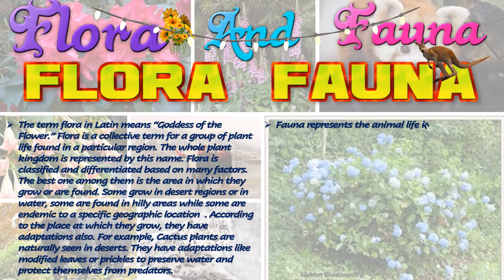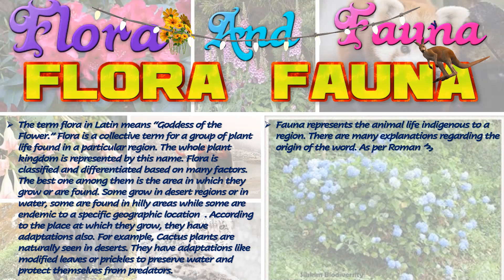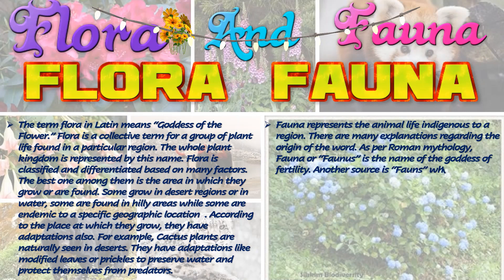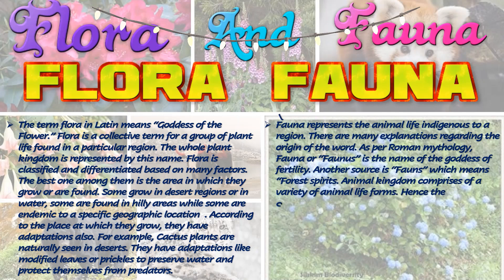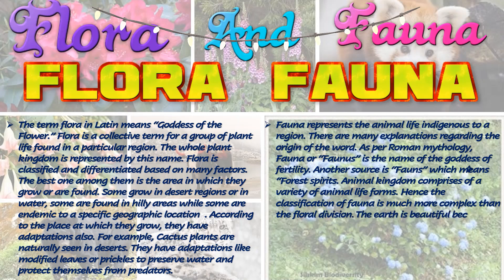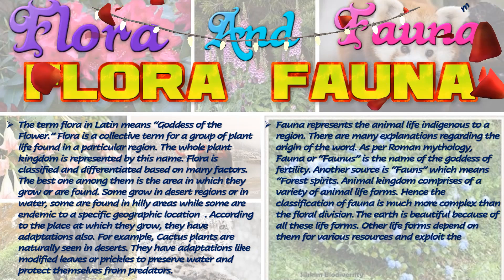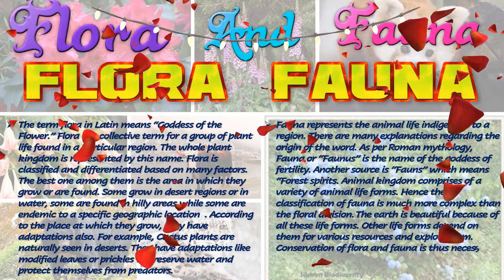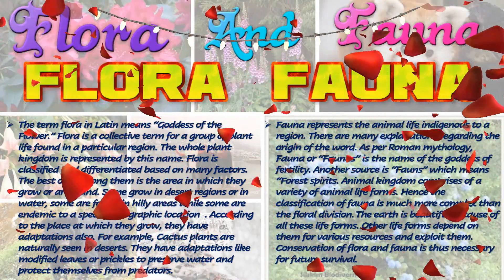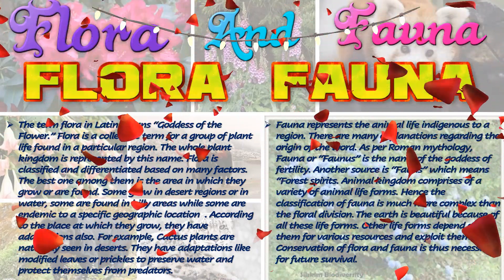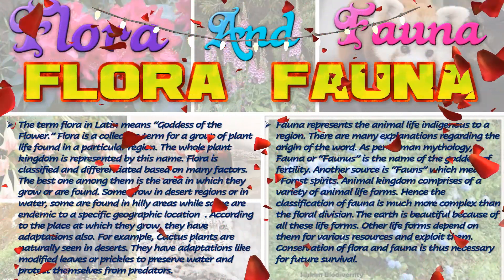Fauna represents the animal life indigenous to a region. As per Roman mythology, fauna or faunus is the name of the goddess of fertility; another source says faunus means forest spirits. The animal kingdom comprises a variety of life forms, hence the classification of fauna is much more complex than the floral division. The earth is beautiful because of all these life forms, which other life forms depend on for various resources. Conservation of flora and fauna is thus necessary for future survival.